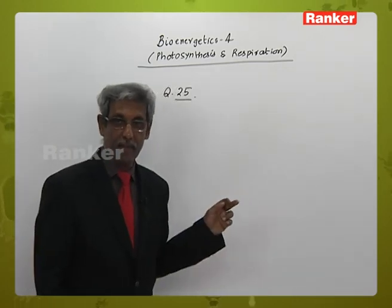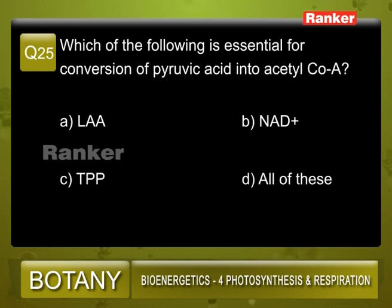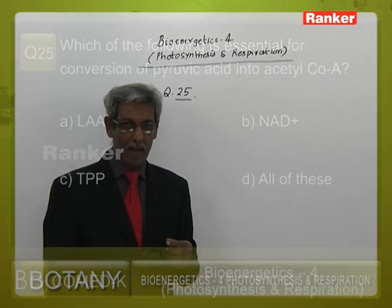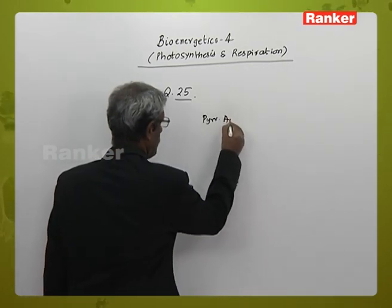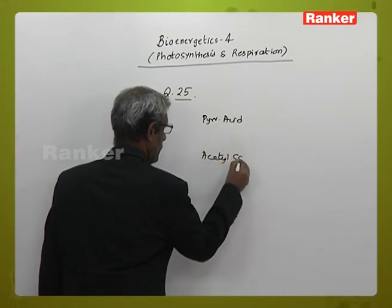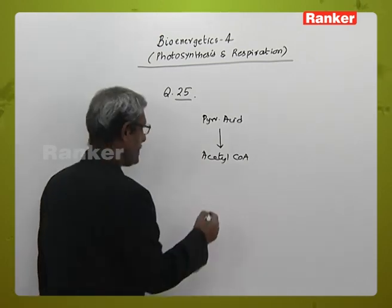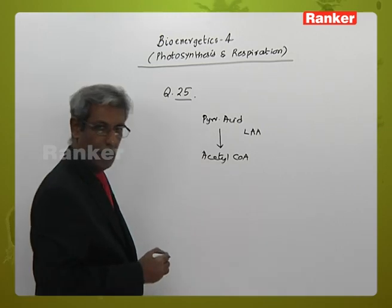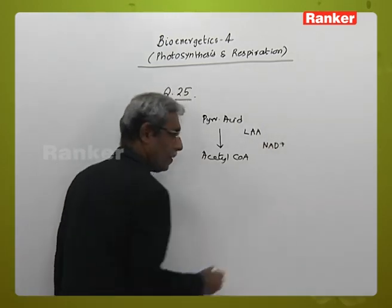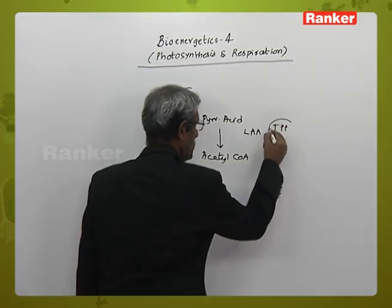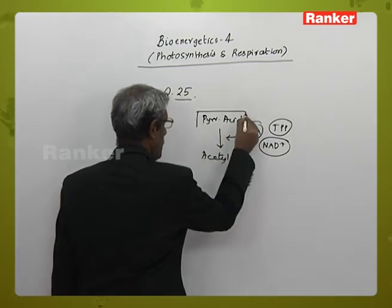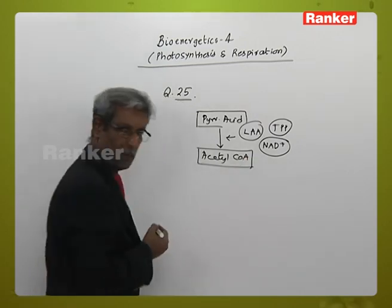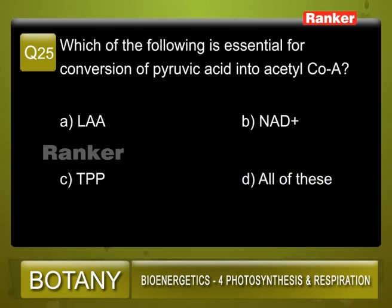Question number 25: Which of the following is essential for conversion of pyruvic acid to acetyl coenzyme A? A: LAA, B: NAD, C: TPP, D: all of these. The conversion from pyruvic acid to acetyl coenzyme A requires LAA, NADH, and TPP. All three compounds are associated with this conversion. Hence the answer is D — all of these.